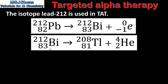In the second equation, Bismuth-212 undergoes alpha decay to form Thallium-208. Note that the alpha particle is represented as a helium nucleus. In alpha decay the mass number decreases by 4 and the atomic number decreases by 2.